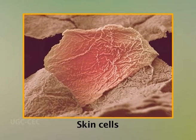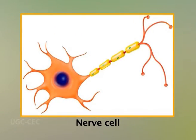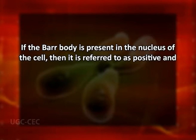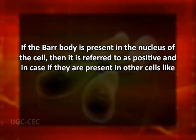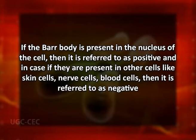Barr bodies are present in other parts of body cells, for example, skin cells, epithelium cells, nerve cells, etc. In a normal female, the number of Barr bodies present is comparatively less than the total number of X chromosomes. If Barr bodies are present in the nucleus of the cell, it is referred to as positive, and if they are present in other cells like skin cells, nerve cells, or buccal cells, it is referred to as negative.